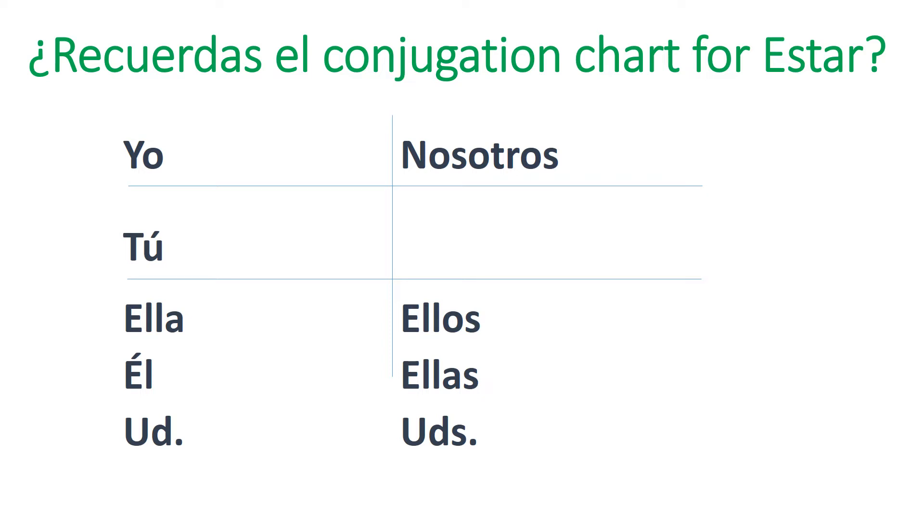So to say I am, we say yo estoy. That's right. How about you are? Informal. Tú estás. How about she is, he is, or you formal are? Ella, él, usted está. Remember, also we would use está for it is, if it's a singular it, just one thing.